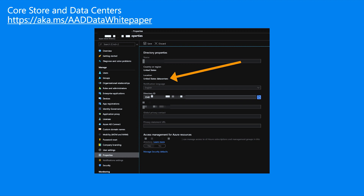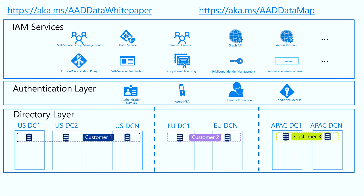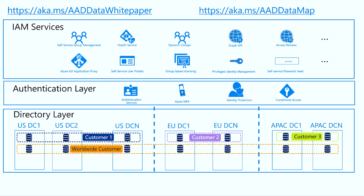What if I'm a multinational who operates globally? How do I choose the right region when working with support? We have a special configuration for large multinationals that truly have employees spread around the world, called the worldwide scale unit. Customers in that scale unit have a presence in each region, so they can serve US users from the US copies, European users from the Europe copies, and APAC users from the APAC copies. It is a special configuration — not readily available for every customer — but if you make your case to support, we can look into it.